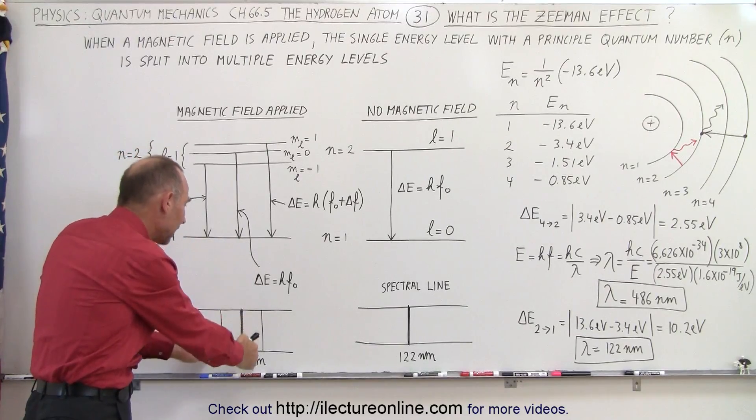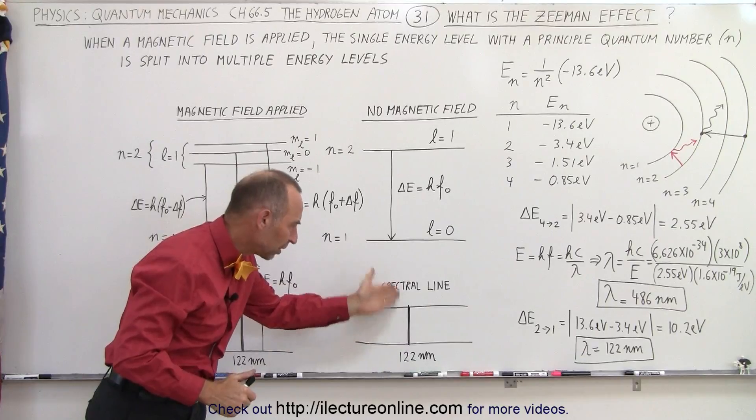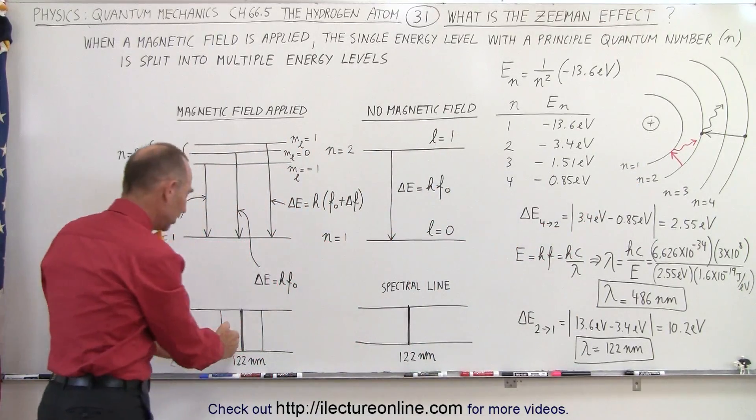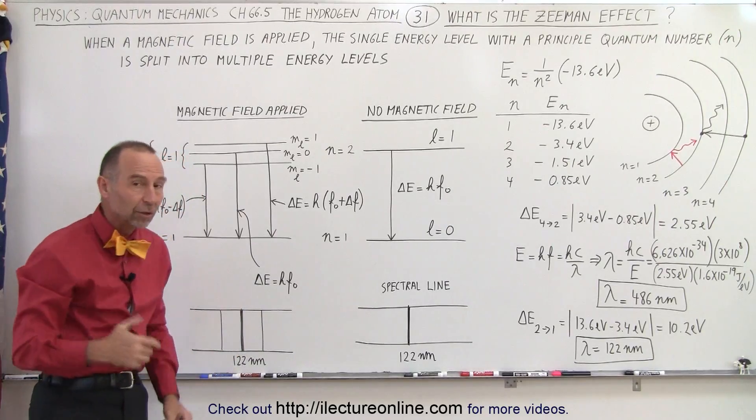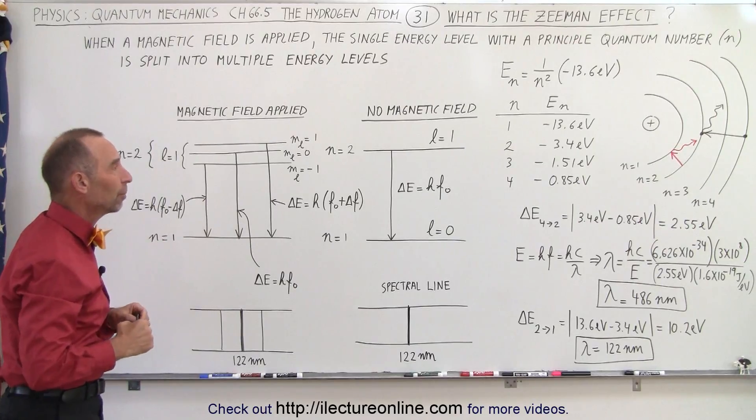We saw additional lines in the spectrum. Instead of seeing a single spectral line for that particular jump, we would see the same single line, but we'd see two additional lines. And the question was, why would we see two additional lines when a magnetic field was applied?